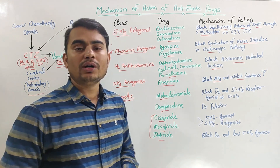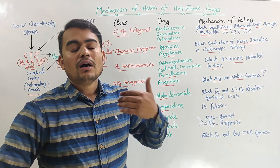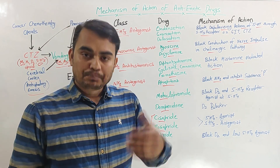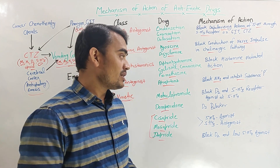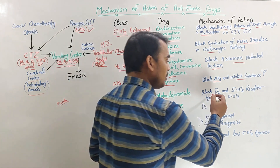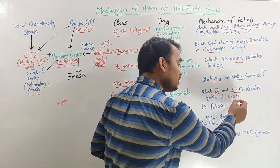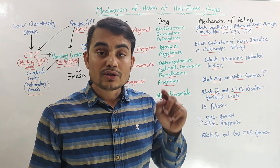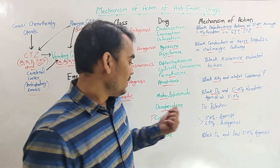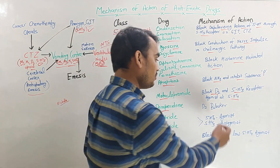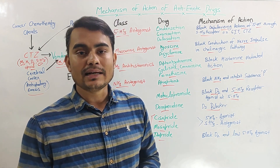Prokinetic drugs include metoclopramide, domperidone, cisapride, mosapride, and etopride. Metoclopramide is a very effective and potent antiemetic because it has both dopaminergic and serotonergic actions — it blocks D2 receptors and 5-HT3 receptors, and also has agonist action on 5-HT4 receptors, collectively increasing gastric emptying. Domperidone is a selective D2 blocker and also increases gastric emptying.